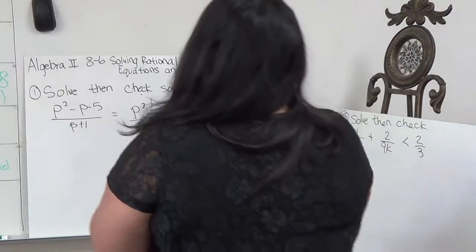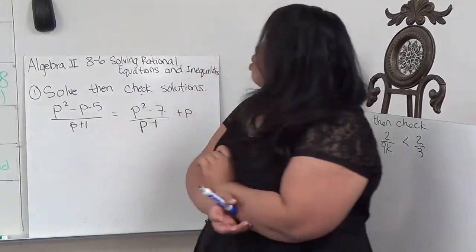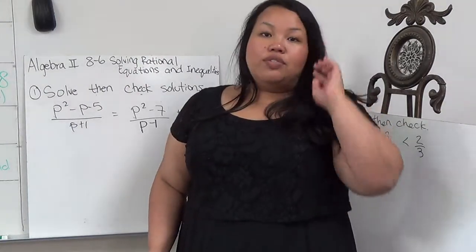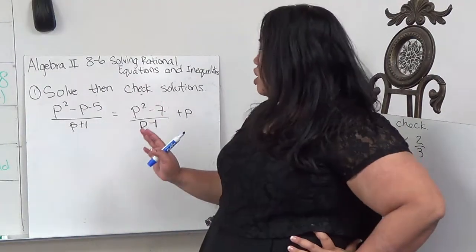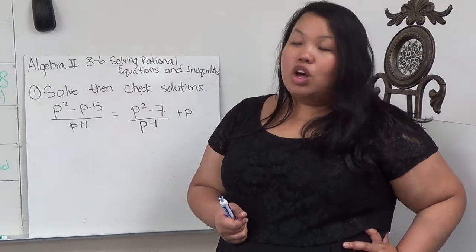In Algebra 2, Section 8-6, we're dealing with solving rational equations and inequality. The easiest thing to do when dealing with all these fractions, which can get a little overwhelming if we're trying to do it longer ways...